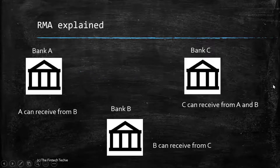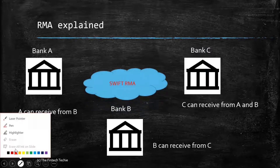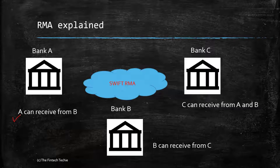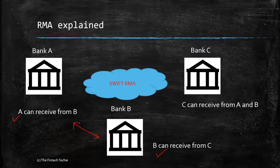Let's take a simple example with three banks — A, B, and C — all connected to the Swift Alliance. We have a rule saying that A can receive messages from B, and B can receive from C. The first thing to note is that these rules are not symmetrical, so just because A can receive from B doesn't mean B can receive from A. Similarly, C has a rule that C can receive from both A and B. These rules are stored in the respective core banking systems of A, B, and C.